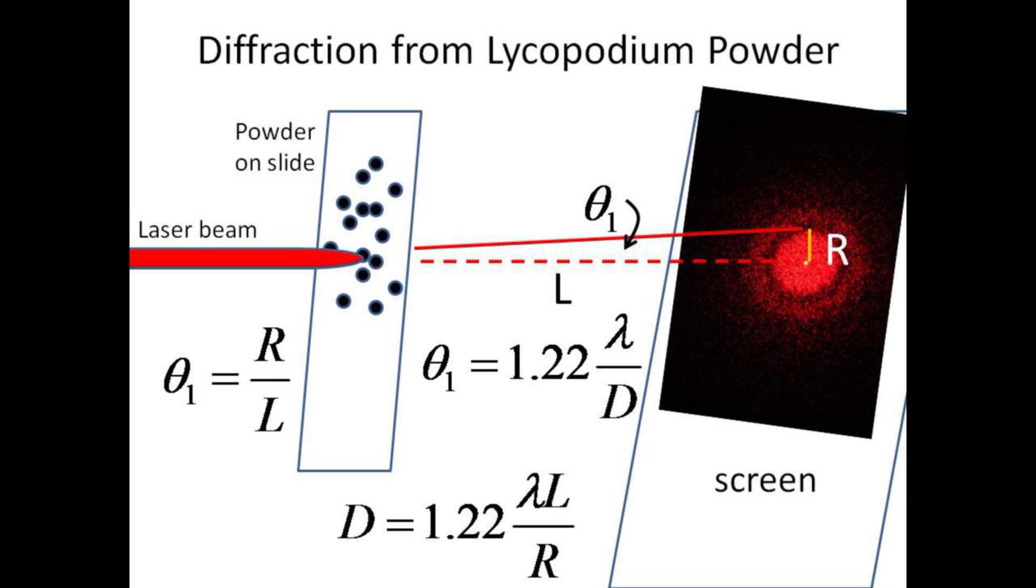We will place lycopodium spores on a microscope slide and shine a laser through. The angle is found from the ratio of the radius of the bright spot R divided by L. Knowing the wavelength of the light, we can determine the diameter of the tiny spores.